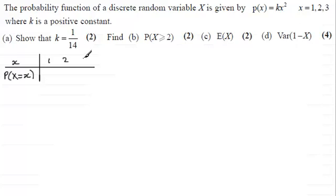And in terms of k, the probability that x equals 1 will be 1 squared times k, or just simply k. When x is 2, you're going to have 2 squared, which is 4 times k, so that's 4k. And similarly, when x is 3, you're going to get 9k. So that's our probability distribution table.